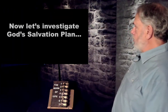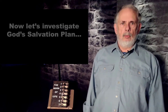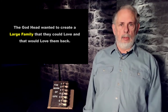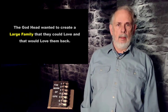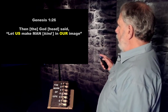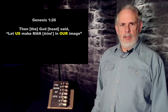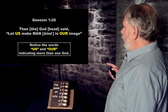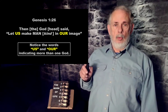Now let's investigate God's salvation plan — where it occurred and how it developed. From the foundations of the world, God had wanted to create a large family that they could love and that would love them back. In Genesis 1:26 we read: 'Then the Godhead said, let us make mankind in our image.' Notice the words 'us' and 'our' are used, indicating there is more than one God — right from the very beginning in Genesis.